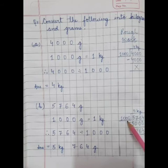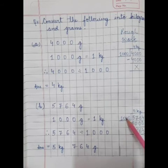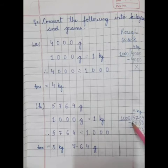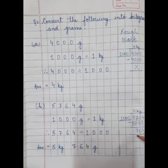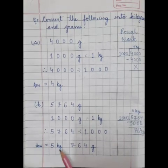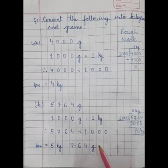5,764 gram divided by 1000. 1000 fives are 5000. When we subtract it, we will get 4, 6, 7. This means 5 kg, 764 gram. And this is our answer: 5 kg, 764 gram.